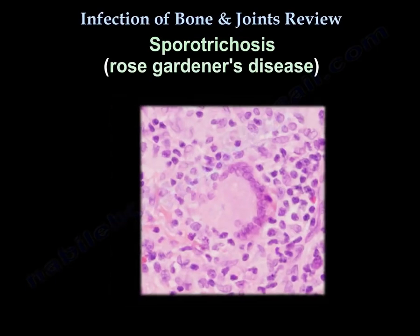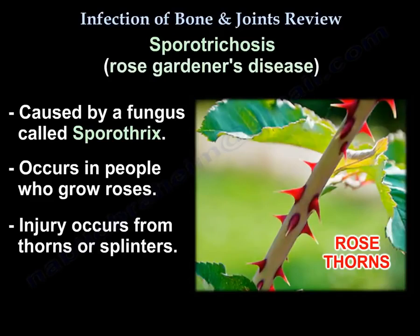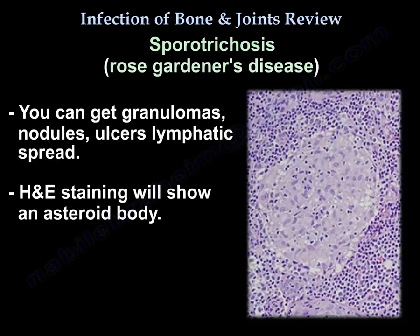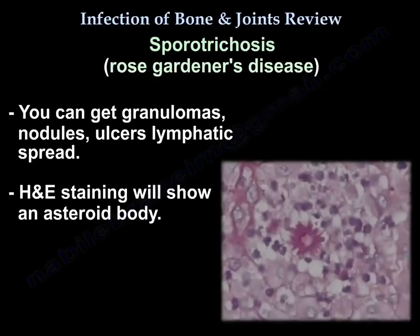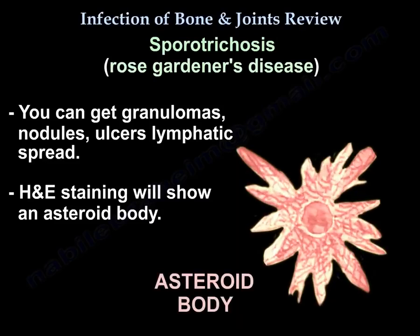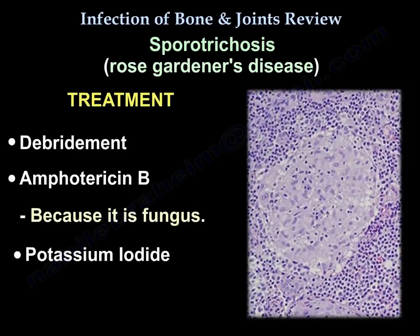Sporotrichosis — Sporothrix is a fungus that occurs in rose growers; the injury happens from thorns and splinters. You can get granulomas, nodules, then ulcers, and lymphatic spread. The H&E stain will show asteroid bodies. Treatment is debridement, amphotericin B (because it's a fungus), and potassium iodide.